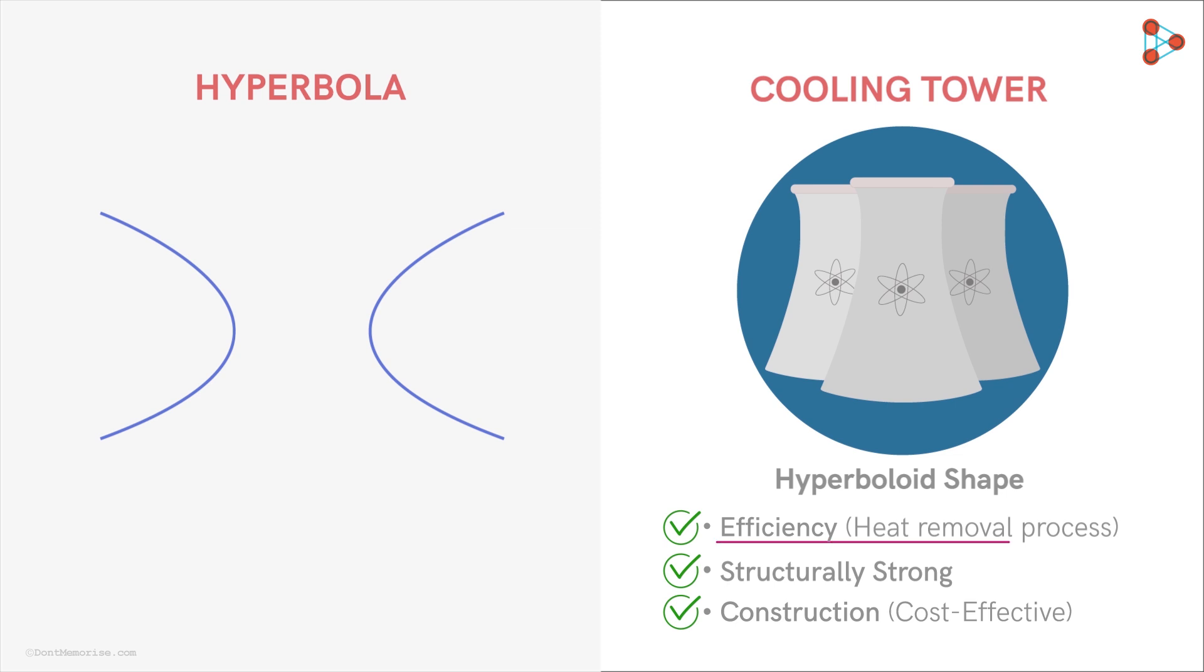Hyperboloid is the shape which fulfills all these criteria. It increases the cooling efficiency, has greater structural strength, and requires minimum usage of material for construction.